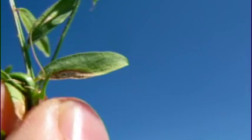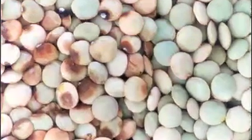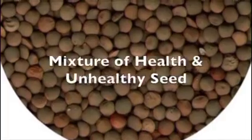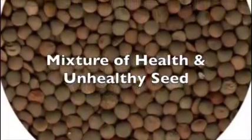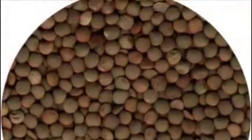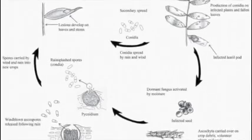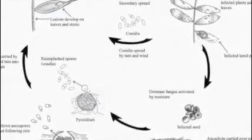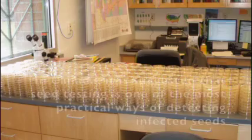Ascochyta lentis can cause significant yield losses and quality downgrading due to infected seeds that appear shriveled or discolored. Infected plants can cause as much as 70% yield losses in a crop. Infected seeds sometimes appear asymptomatically and could be mixed with other healthy seeds. Spore transmission is another pathway to spread the disease from infected seed to other parts of the seedling.